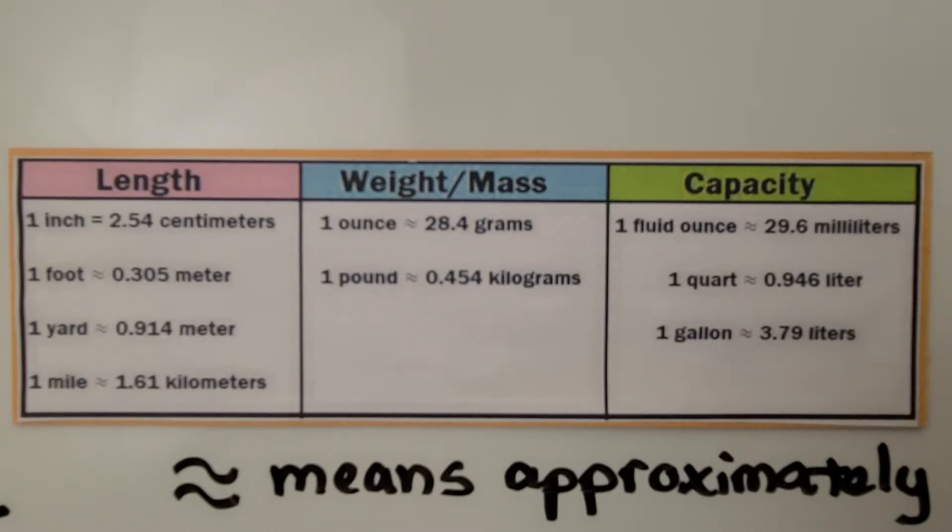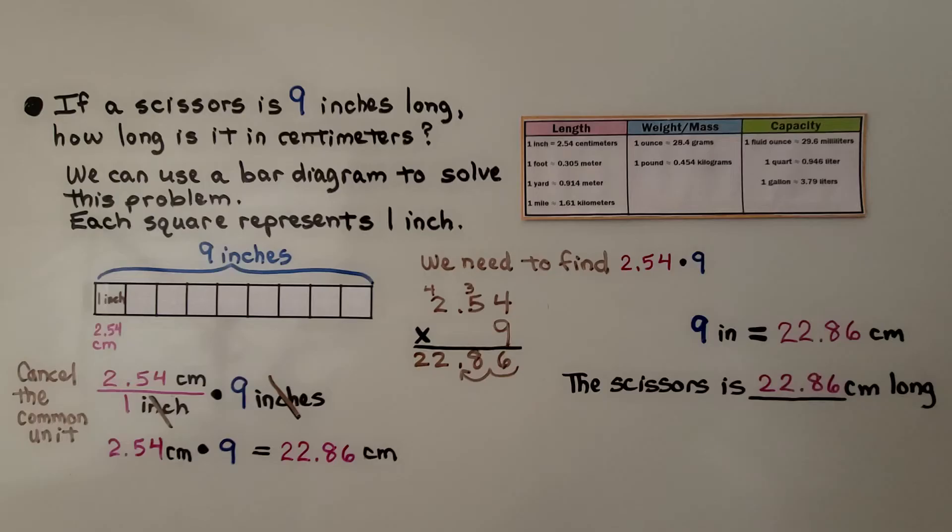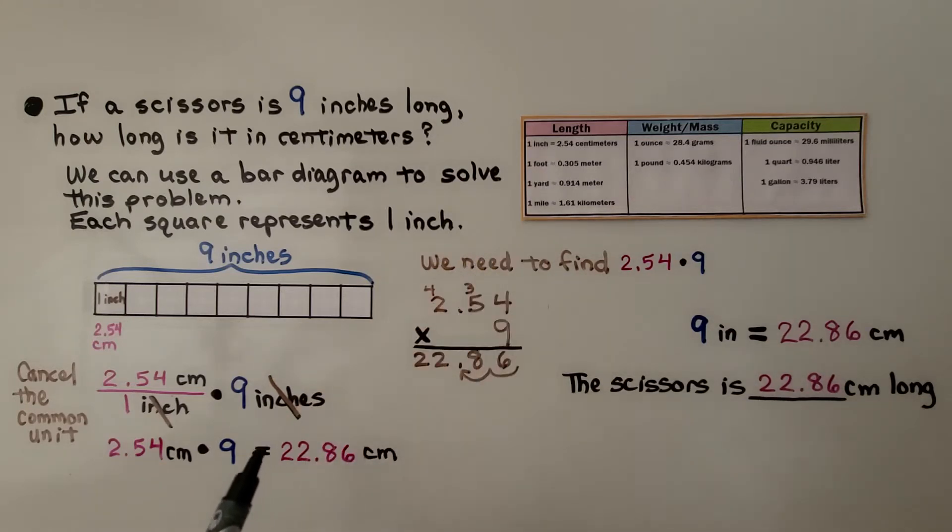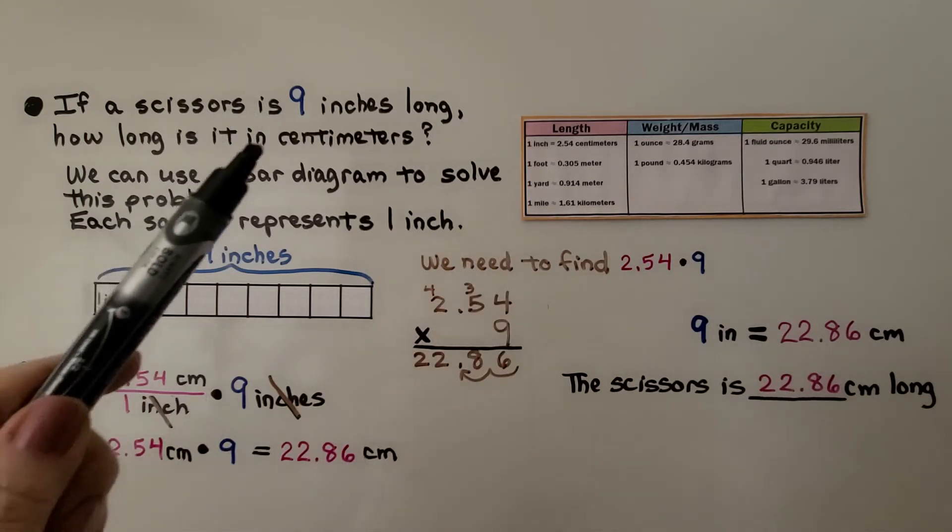We have to use an approximate symbol when we're doing these conversions. But because 1 inch is equal to 2.54 centimeters, we can use an equal sign when we go from inches to centimeters.